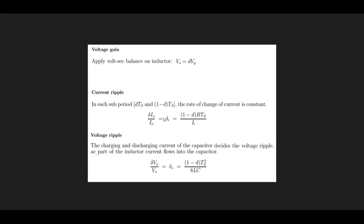From here, by applying voltage-second balance in the inductor, the output can be found: V_output equals duty cycle D times V_input. For the current ripple, during each turn-on and turn-off period where Ts is one switching cycle time period, the rate of change of current is constant, so from this formula we can find L. The voltage ripple arises from the charging and discharging of the capacitor — the AC part of the inductor current flows through the capacitor — and putting L into this formula we can find C.